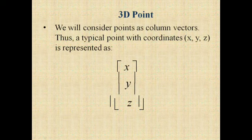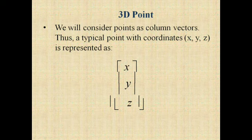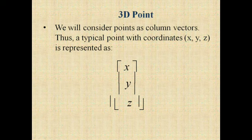The 3D point. We will consider points as column vectors. Thus, the typical point with coordinates, we usually represent as X, Y. In 2D, we have here Z coordinates. So we have to represent the matrix as X, Y and Z.